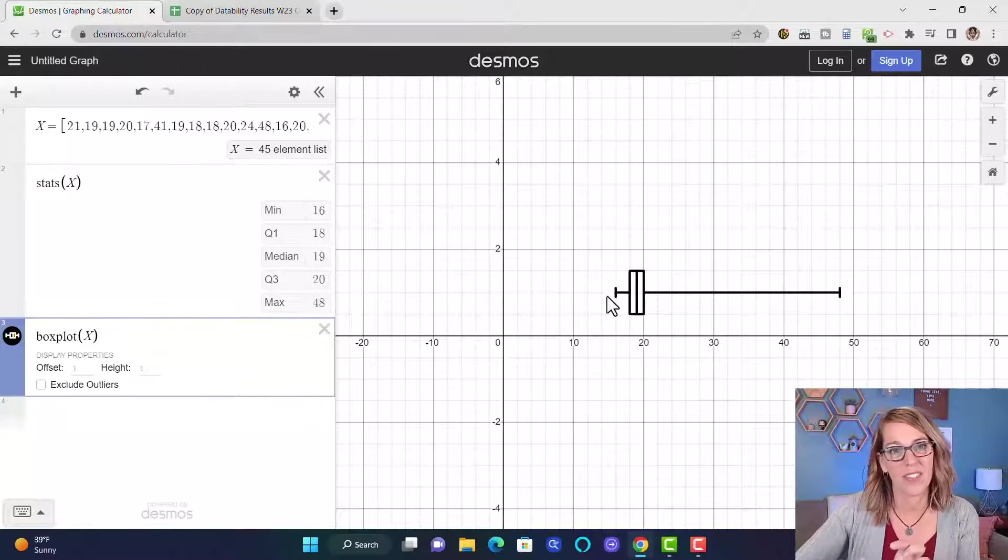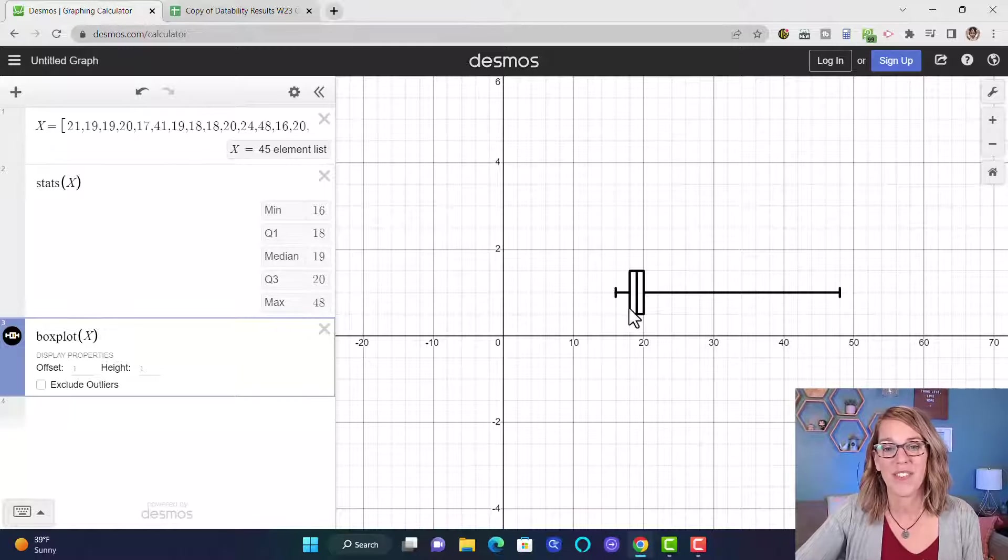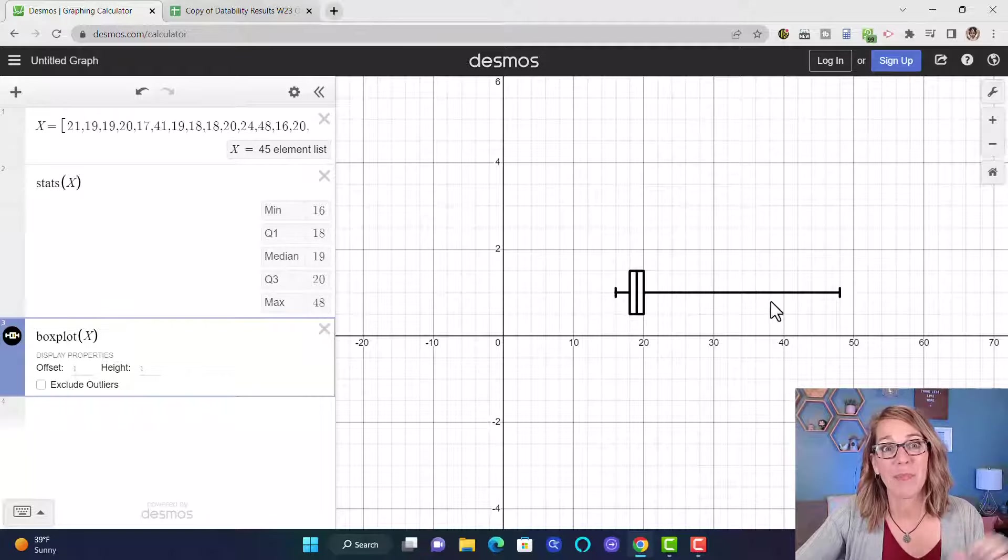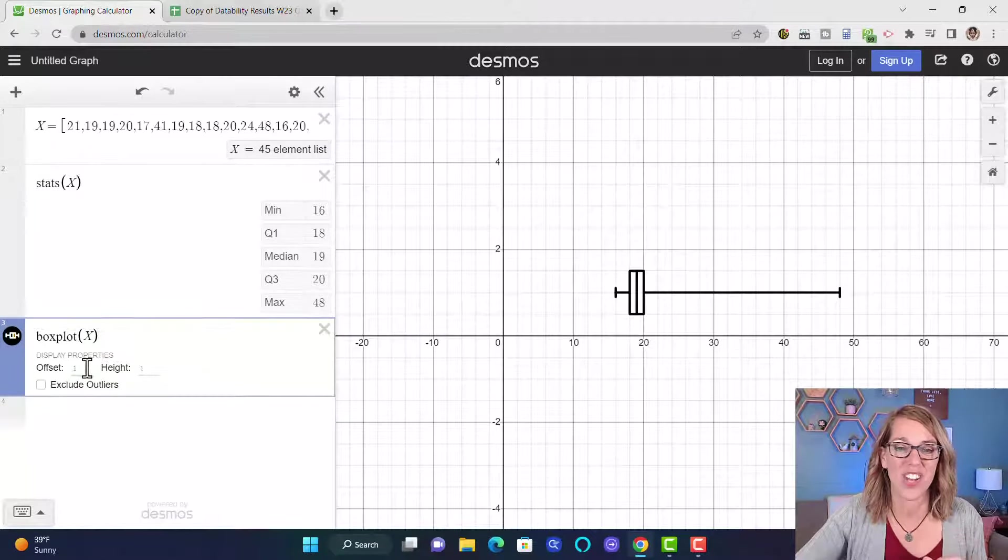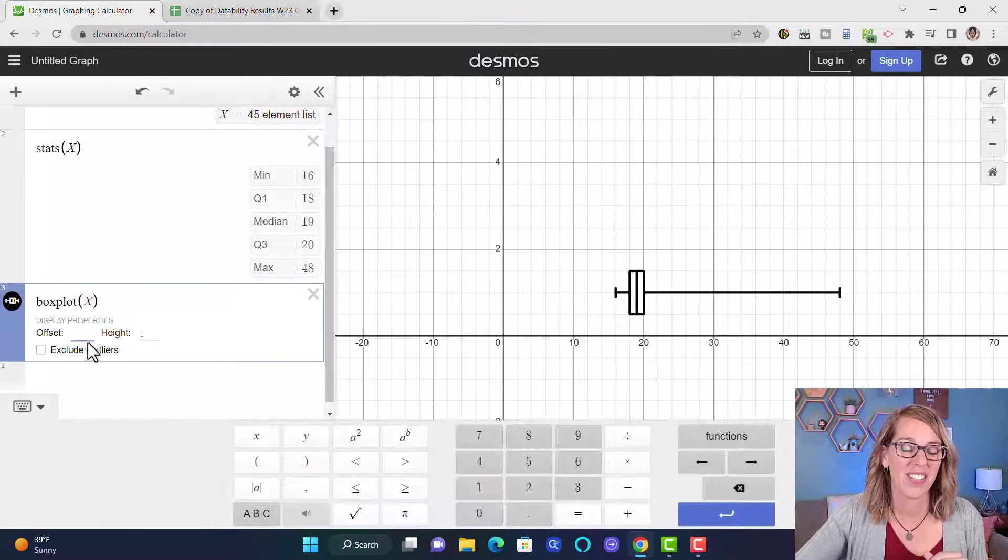Where you've got 25% of your data in the first whisker, 25% in the next, 25% in the next box, and then the upper 25% in the last line. I can also change what the offset is.